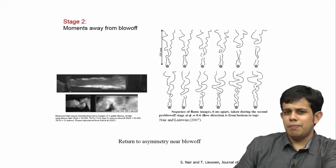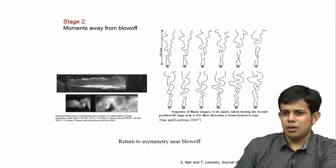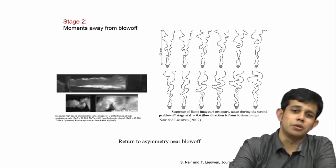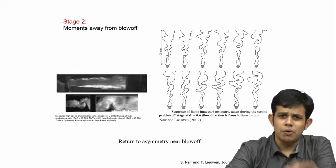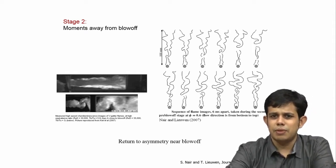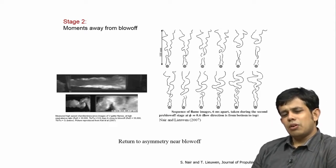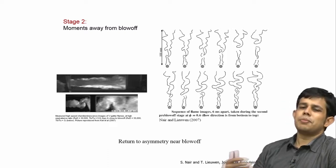They said that as blow-off is approached, there is a lot of extinction, and that may be causing the flow to undergo a transition from convective instability to absolute instability — that is, from symmetric vortex shedding to asymmetric vortex shedding. But of course, we do not know the exact mechanism by which extinction along the flame structure is happening.